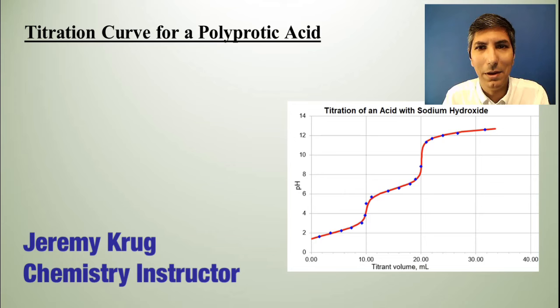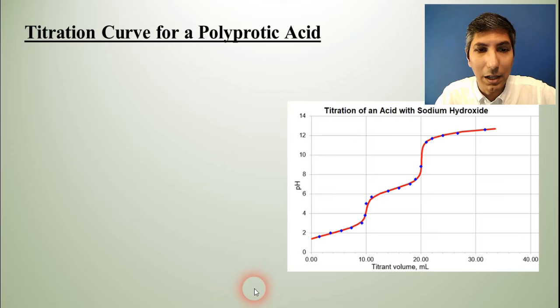Here in this picture we have a titration curve for a polyprotic acid, and on the x-axis you see that we have the volume or the milliliters of the sodium hydroxide that has been added, and on the y-axis we have the pH. Now you'll notice that this titration curve looks significantly different than the two curves that we looked at in our two previous videos.